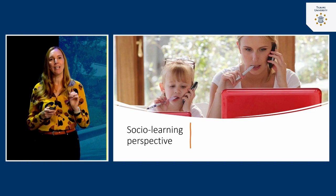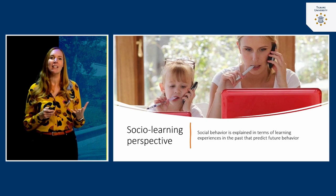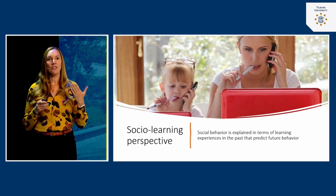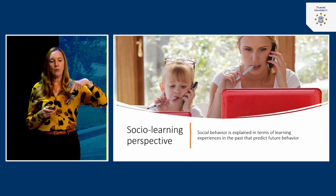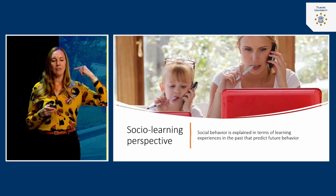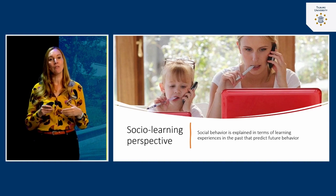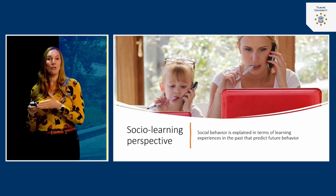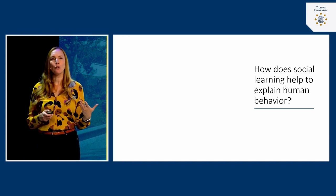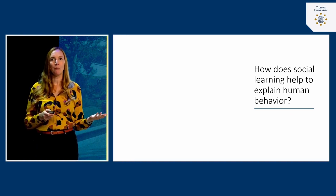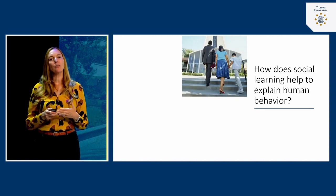The third perspective is the social learning perspective. In this perspective, social behavior is explained in terms of learning experiences in the past that predict our future behavior. How we developed — especially in our youth — is a main focus of the social learning perspective in shaping our behavior today.